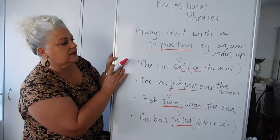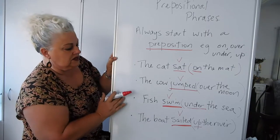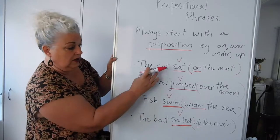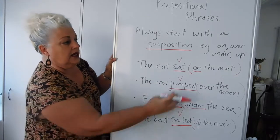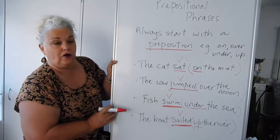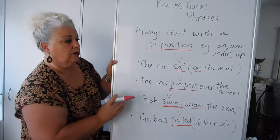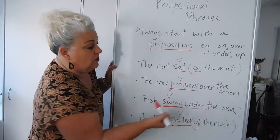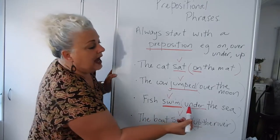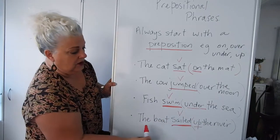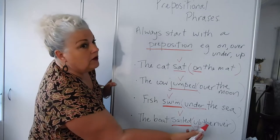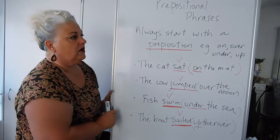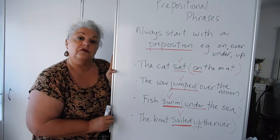So let's revise them. There are four simple sentences here. Each one has a verb, each one has a subject, and each one has a prepositional phrase showing position. The cat is on the mat, the cow over the moon, the fish swimming under the sea, and the boat sailed up the river, showing the position of the boat. So that's a very, very basic lesson on prepositional phrases.